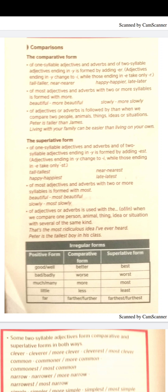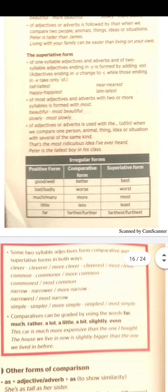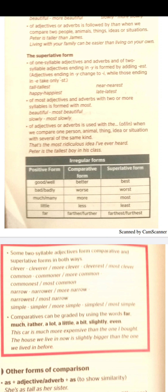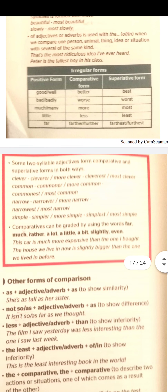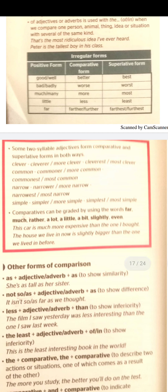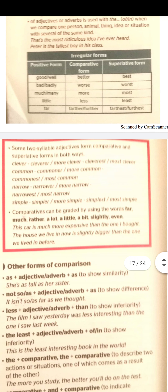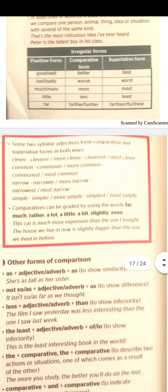Some irregular forms: 'good' and 'well' become 'better' and 'best'. 'Bad' and 'badly' become 'worse' and 'worst'. 'Much' and 'many' become 'more' and 'the most'. 'Little' becomes 'less' and 'the least'. 'Far' becomes 'further' or 'farther', and 'farthest'. For two-syllable words like 'clever', 'common', 'narrow', and 'simple', we can use either -er/-est or more/most.